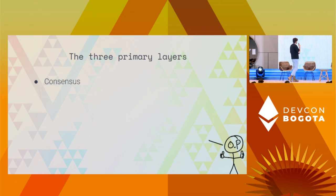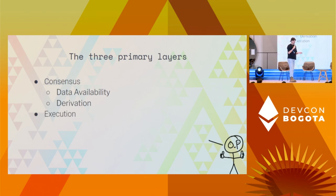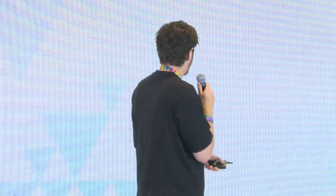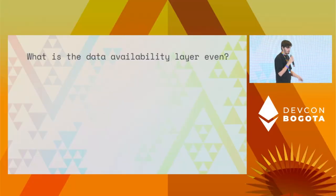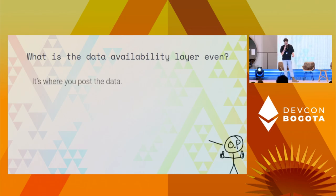There are three primary layers. We've got consensus — and inside of consensus, we've got two things: data availability, which you've heard of, and derivation, which you may not have heard of. Then execution, then settlement. Let's look at consensus, and specifically these two sub-components: the data availability layer and the derivation layer.